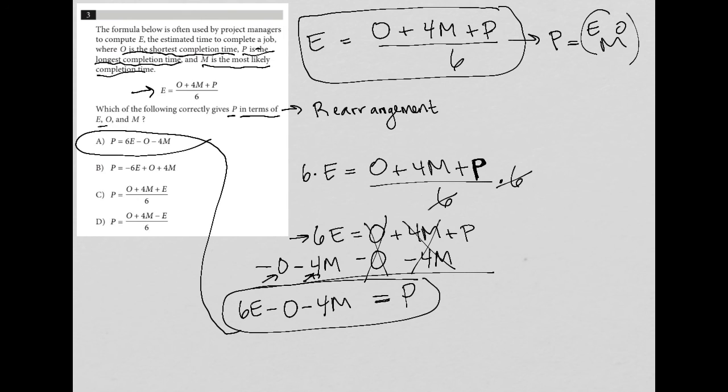So although again, the P is on the left-hand side of the answer, it's on the right-hand side in the work that I did. It doesn't really matter. I can always just rearrange this and put P here and say that's still equal to six E minus O minus four M. So choice A is our best answer here.